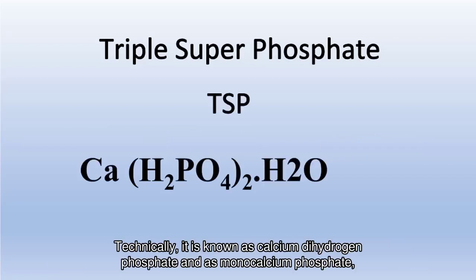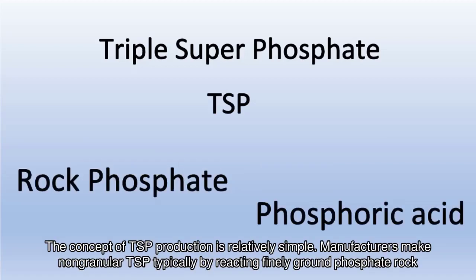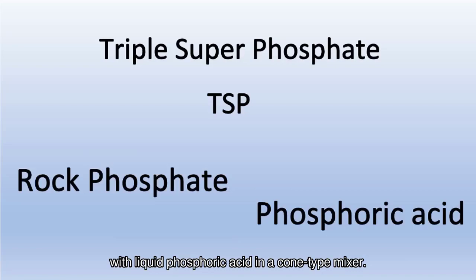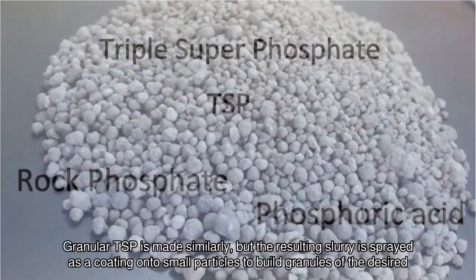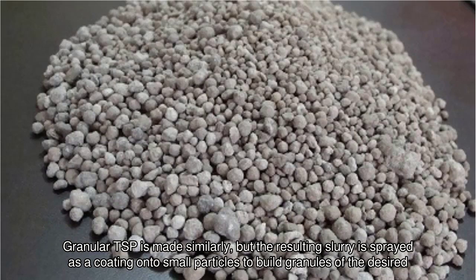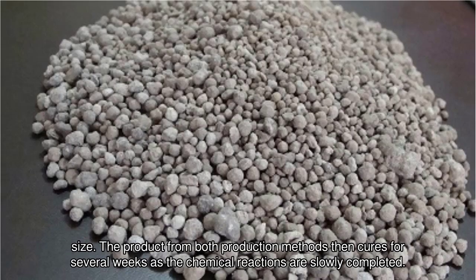Technically, it is known as calcium dihydrogen phosphate and as monocalcium phosphate. The concept of TSP production is relatively simple. Manufacturers make non-granular TSP typically by reacting finely ground phosphate rock with liquid phosphoric acid in a cone-type mixer. Granular TSP is made similarly, but the resulting slurry is sprayed as a coating onto small particles to build granules of the desired size. The product from both production methods then cures for several weeks as the chemical reactions are slowly completed.